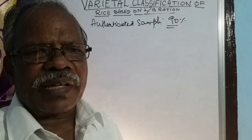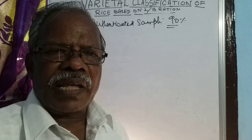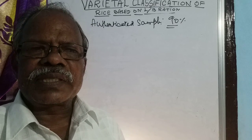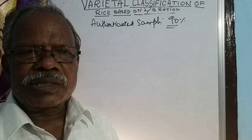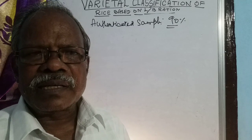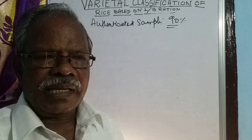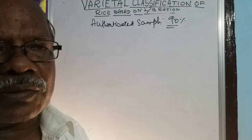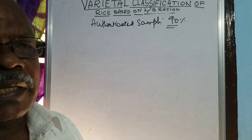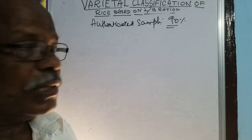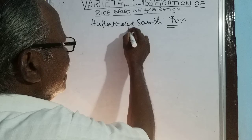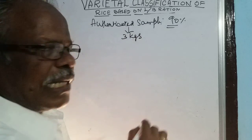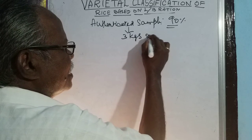Only notified varieties are available in the market, and those alone should be procured by FCI or any other agencies. Before coming to the market, all varieties are notified by the Government of India based on the LB ratio. To fix the variety, 3 kg of paddy is obtained from the authenticated sample.